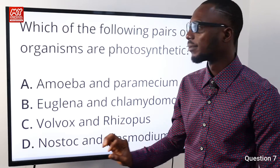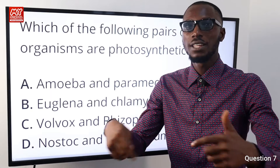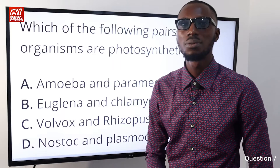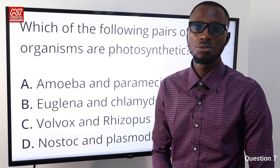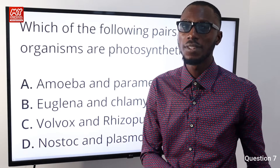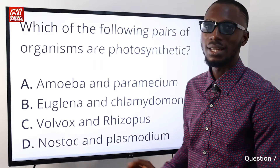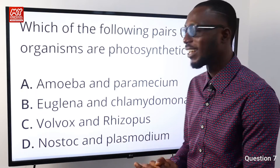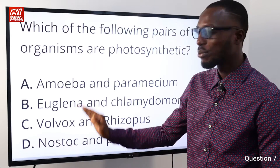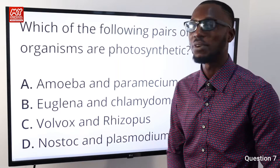Question number seven: which of the following pairs of organisms are photosynthetic? Option A includes amoeba, which obtains its food by engulfing it from its environment — so this is out. Euglena can be referred to as a mixotroph that can use the holophytic or saprophytic mode of nutrition. Chlamydomonas definitely uses the holophytic mode of nutrition. So option B, Euglena and Chlamydomonas, is very correct.